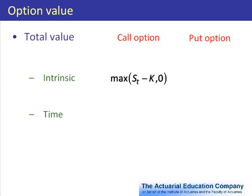For a put option we've got the right to sell our asset for k, and so the intrinsic value here would be the maximum of k minus s and zero. Because if k were less than s we wouldn't exercise, and so the intrinsic value always has a minimum of zero.